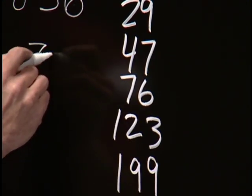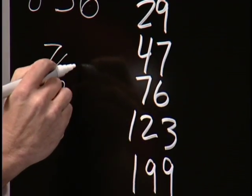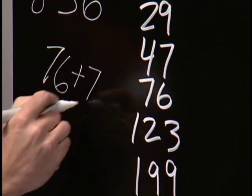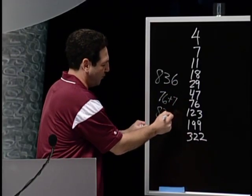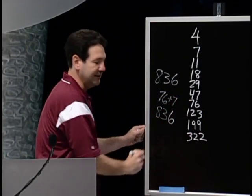And then I took seventy-six plus the ten-digit. Seventy-six plus seven is eighty-three. And then I just tacked on the one-digit. Eight, three, six. You understand how it works?